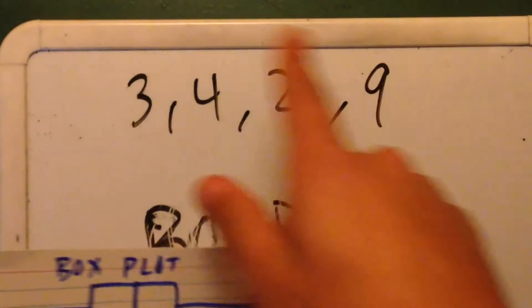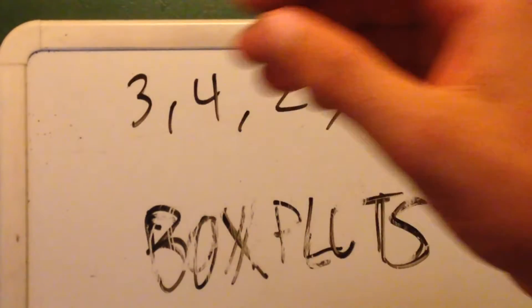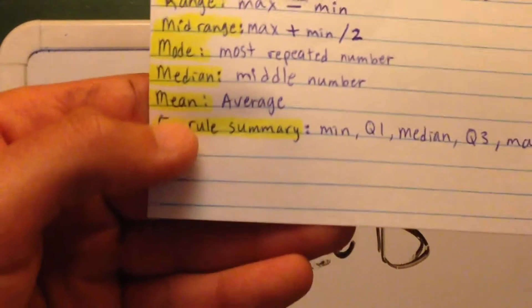And the mean, which is you add them all, you divide by 4, the quantity. The average is all of them divided by how much there is. In this case it's 4. And that's how you find the mean, which is also known as the average.